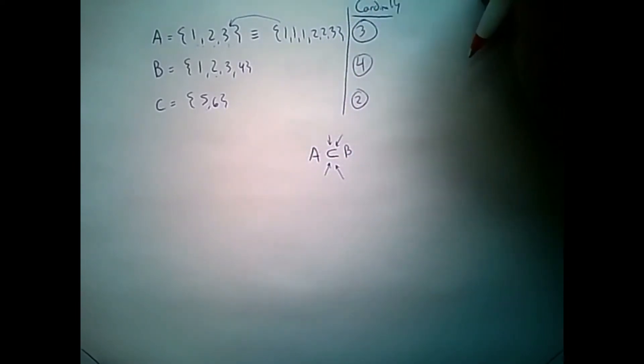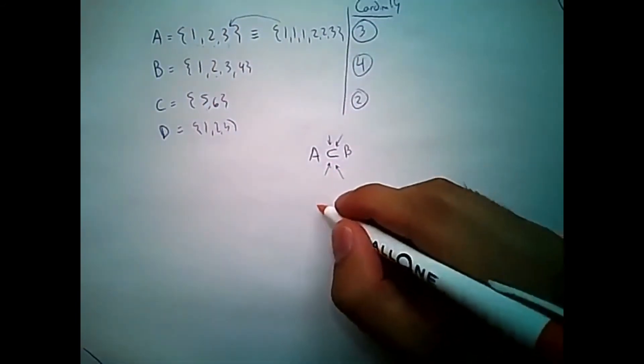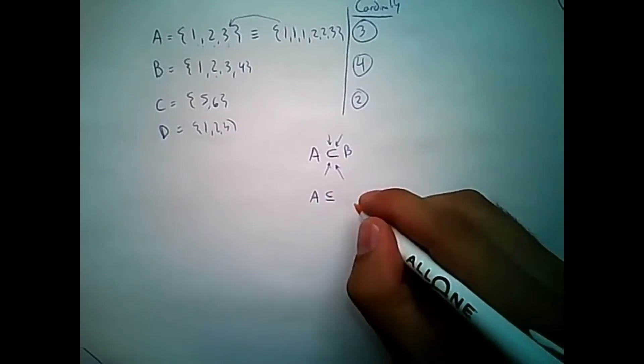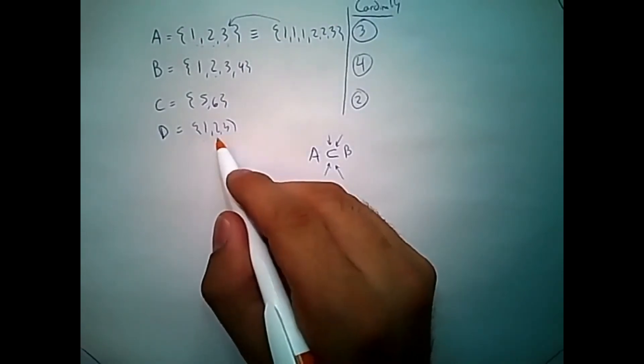I can use a different notation. And to do that, I'm going to introduce set D, which has 1, 2, and 3 in it. And I would say set A is a subset and might be equal to D. In this case, 1, 2, and 3.